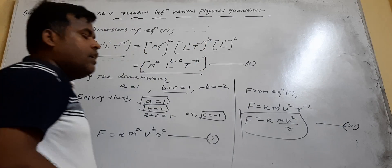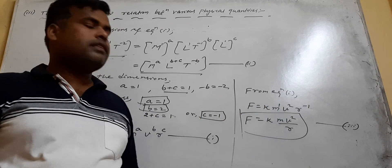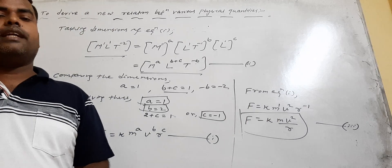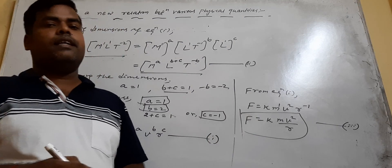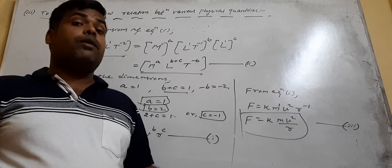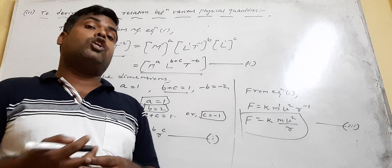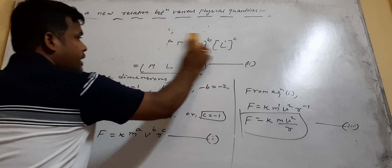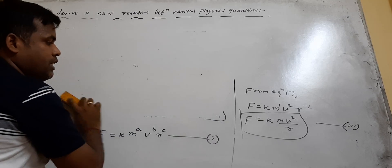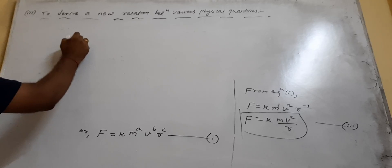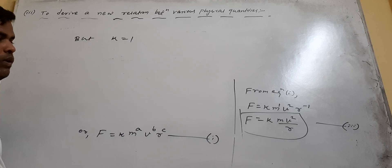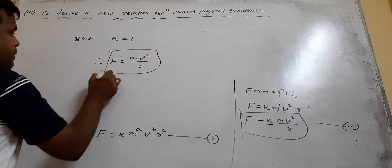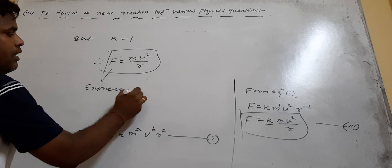So F is directly proportional to mass, directly proportional to the square of the velocity, and inversely proportional to the radius of the circular path. The value of K cannot be determined from dimensional analysis — that is one of its drawbacks. But if you know K, you write it. Here K equals 1, therefore F equals MV²/R. This is the expression for centripetal force.